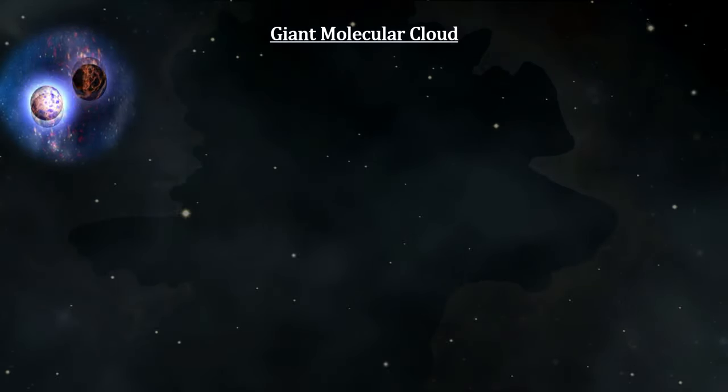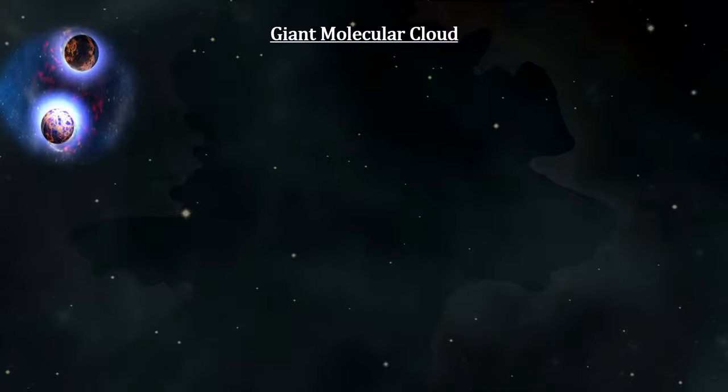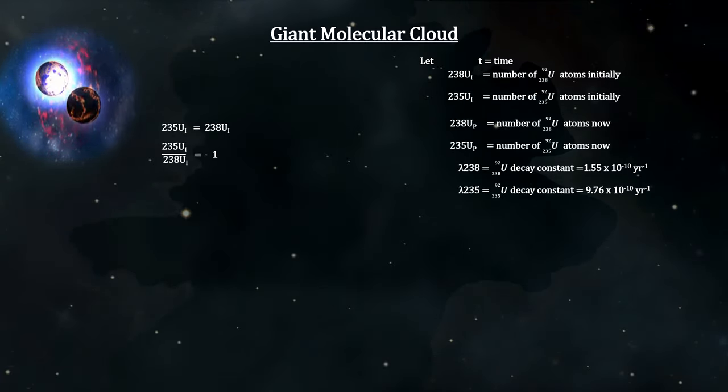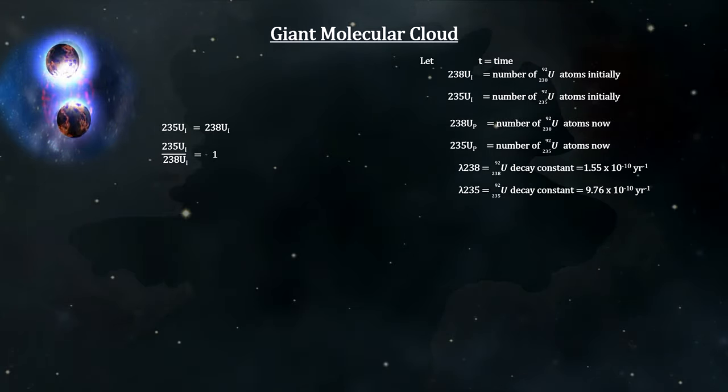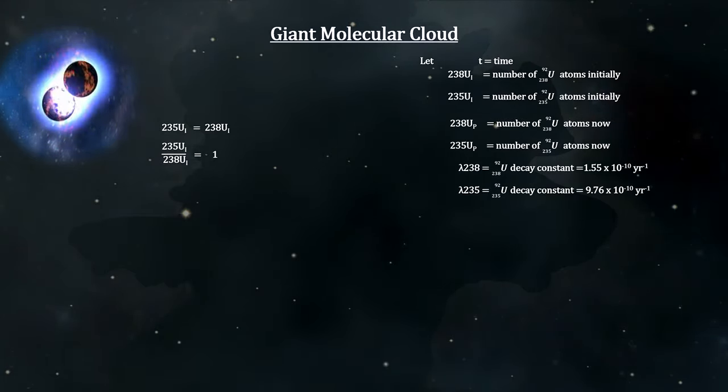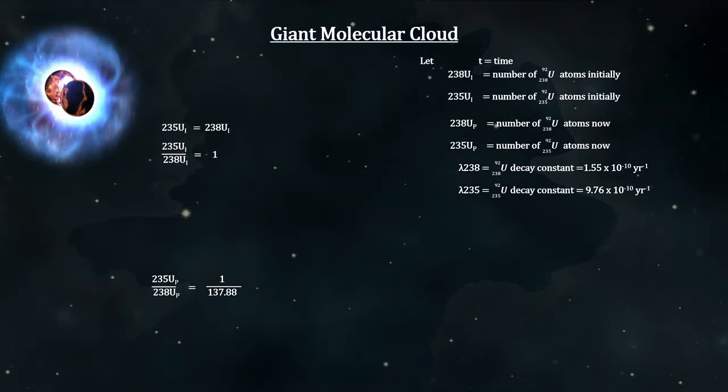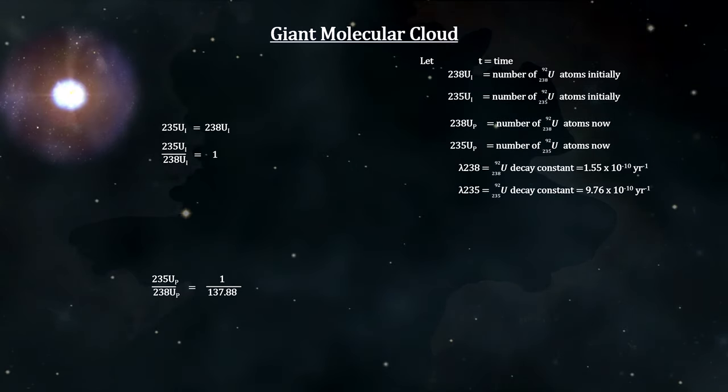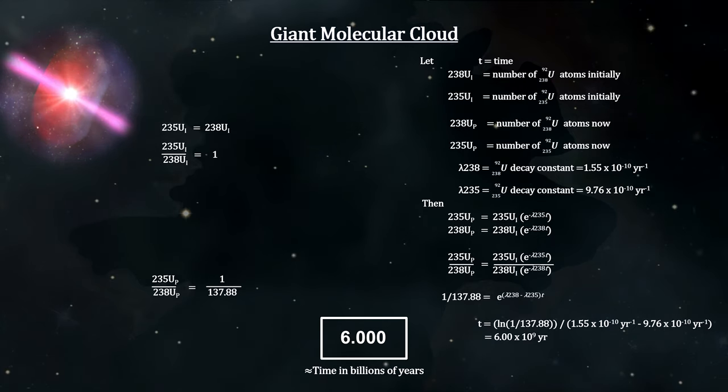Our first data point is provided by uranium decay. A neutron star merger would have seeded our cloud with relatively equal amounts of uranium-235 and uranium-238. The time it takes for the ratio to reach today's value of 1 uranium-235 for every 137.88 uranium-238s is 6 billion years.